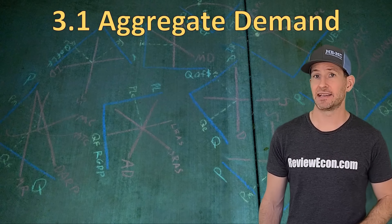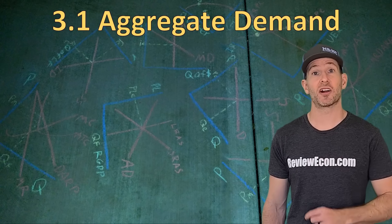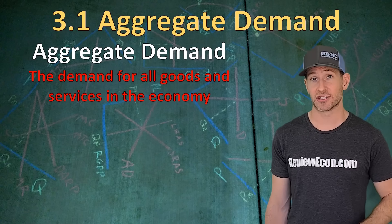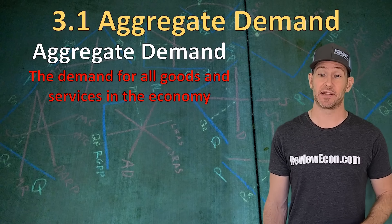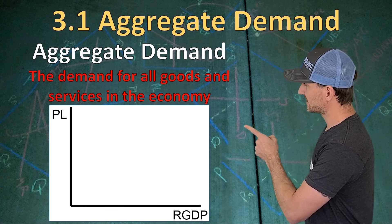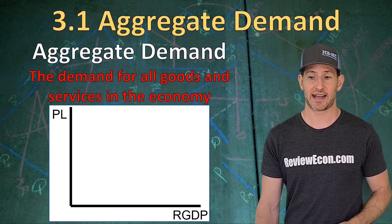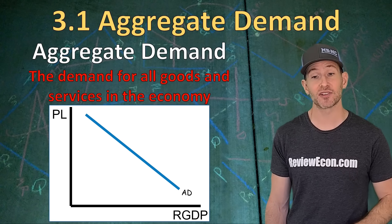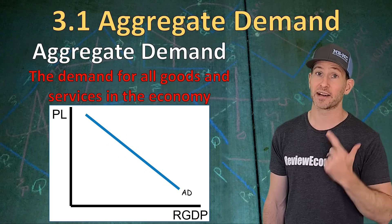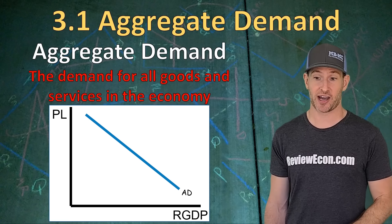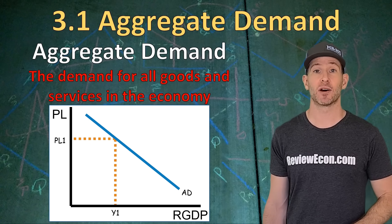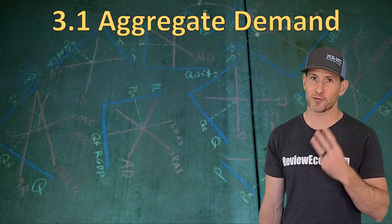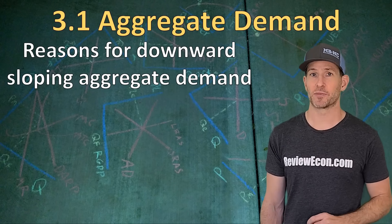The next thing we're going to talk about is the AS-AD model of the economy. We'll start by discussing the aggregate demand curve. Aggregate demand is the demand for all goods and services within an entire economy. When we graph it out, we have price level on the y-axis and real GDP on the x-axis. We have a downward sloping aggregate demand curve, which shows an inverse relationship between the price level and the quantity of real output produced. At high prices we have low levels of output, and at low prices we have higher levels of output. There are three reasons why we have a downward sloping aggregate demand curve.